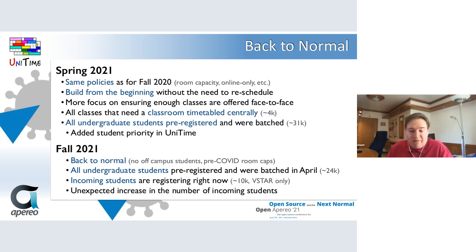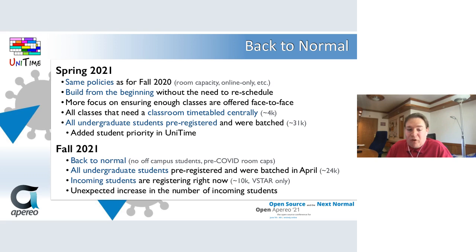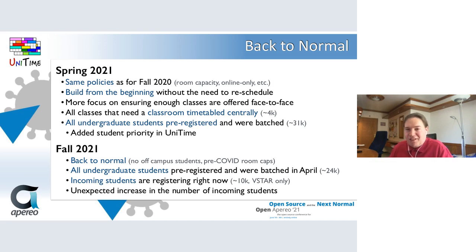For fall 2021, we are back to normal in terms of policies. Room capacities are back and there are no off-campus students. However, quite a lot of courses are still being offered online or with some online components. Course timetabling was still done centrally for all classes needing a classroom, and all undergraduate students pre-registered and were batched. We are currently in the pre-registration of incoming students, looking at an unusually large incoming class that brings additional challenges to the process.